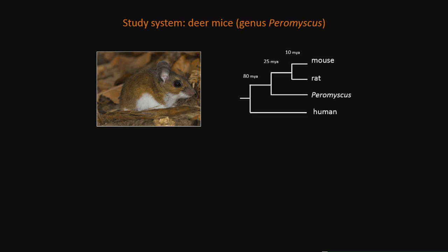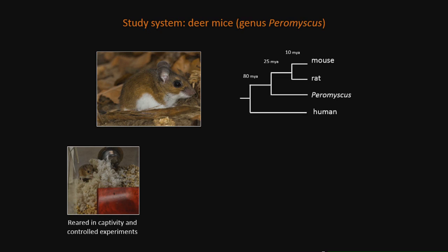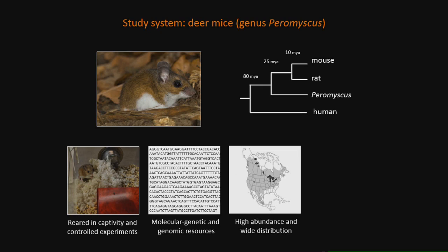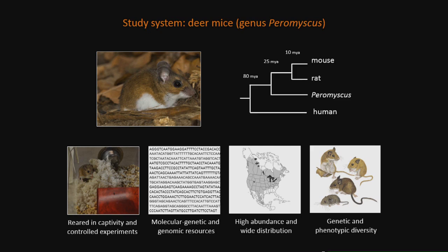Like laboratory mice, Peromyscus can be brought into the lab, reared in captivity, and we can do nice controlled behavioral experiments. Our lab, along with others, has been building molecular and genetic resources for Peromyscus — we have two new whole genome sequences and have been working on transgenesis. Unlike lab mice, these are non-human commensals found in a wide diversity of habitats — the deserts of Arizona, the plains of Nebraska, the beaches of Florida — leading to a tremendous amount of both genetic and phenotypic diversity among these mouse species.